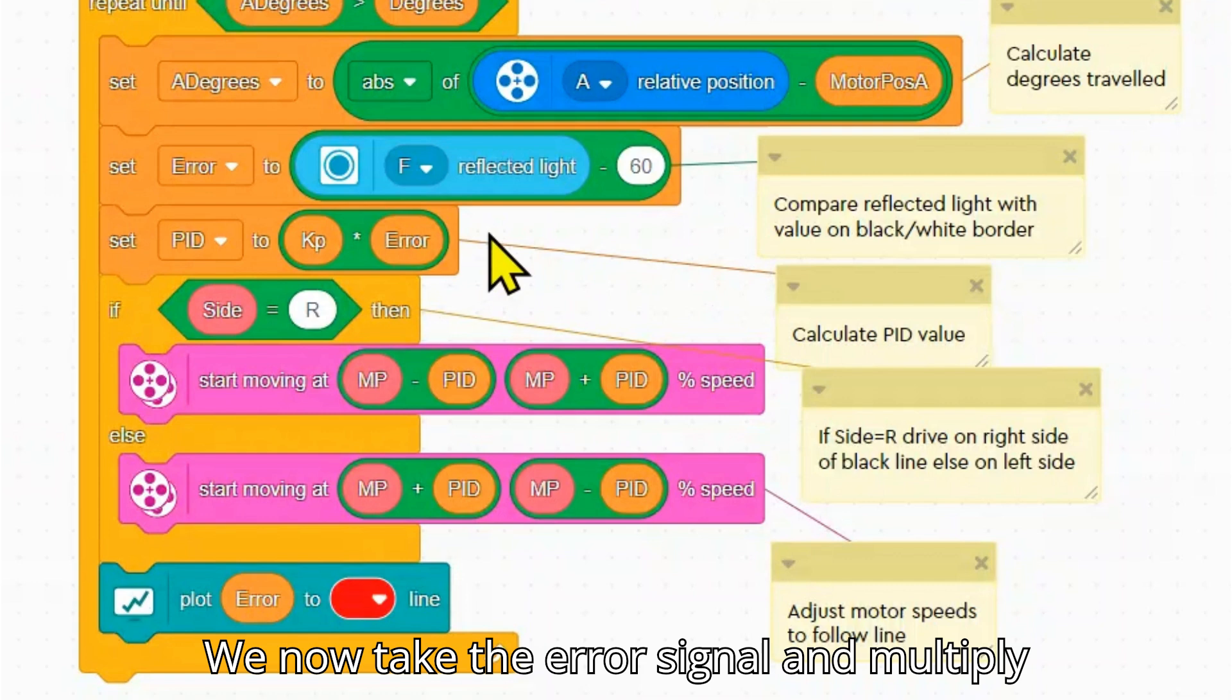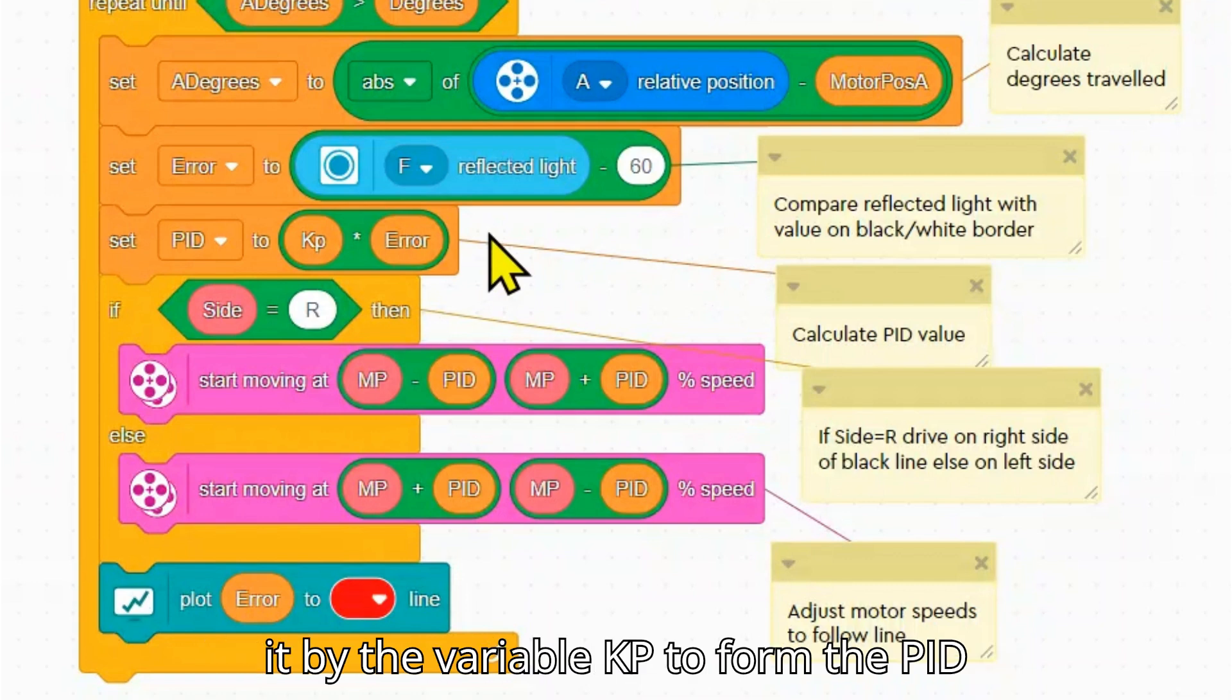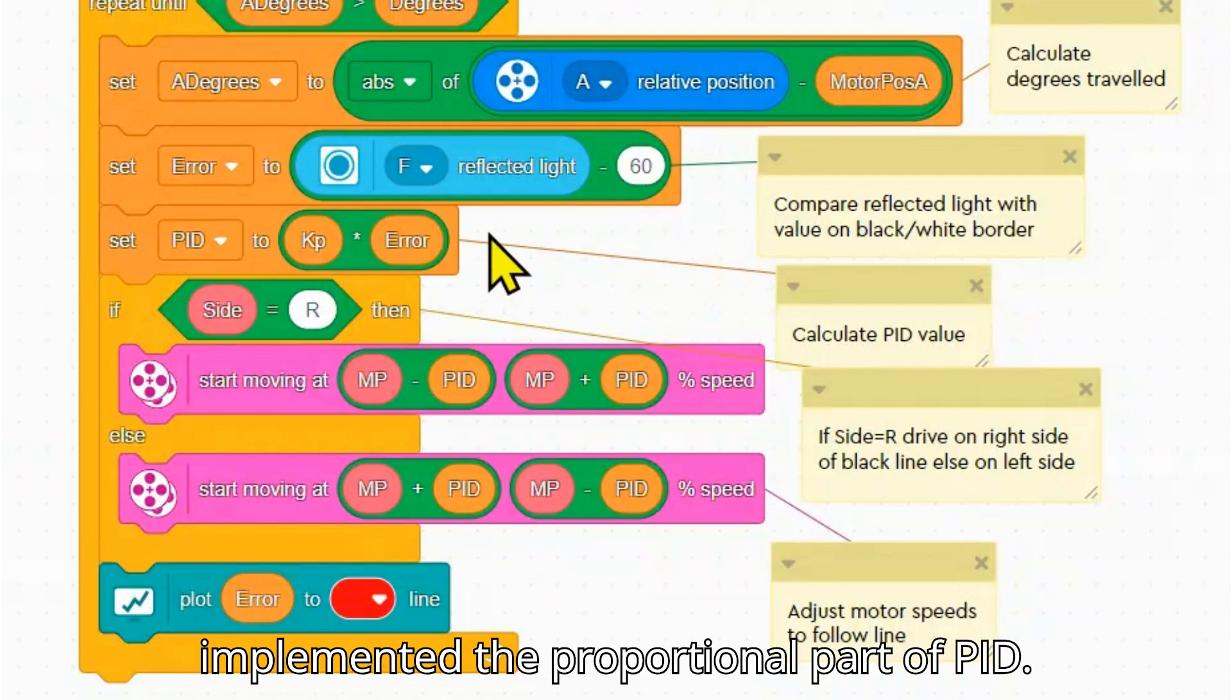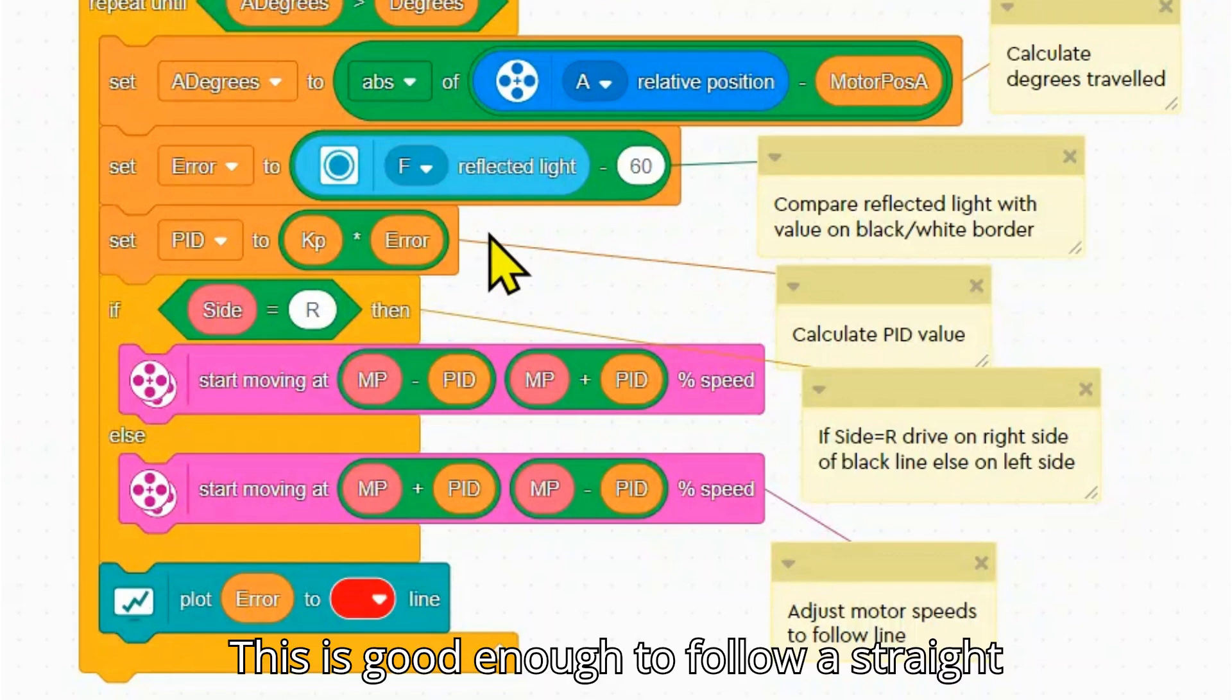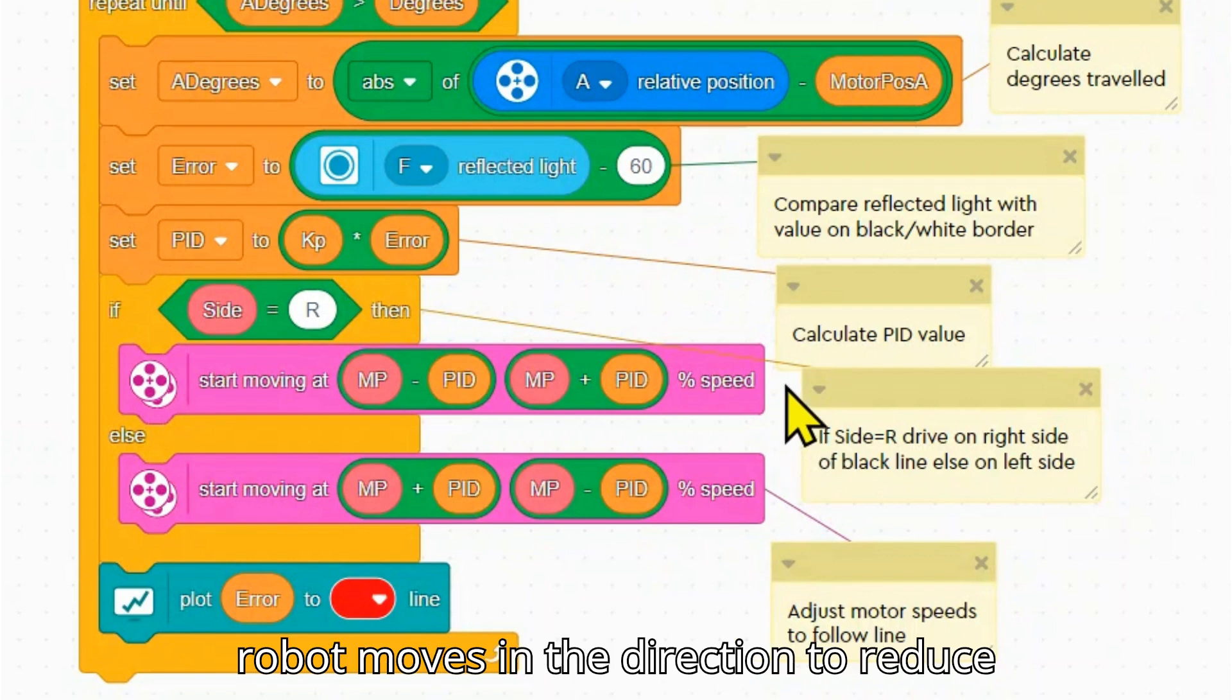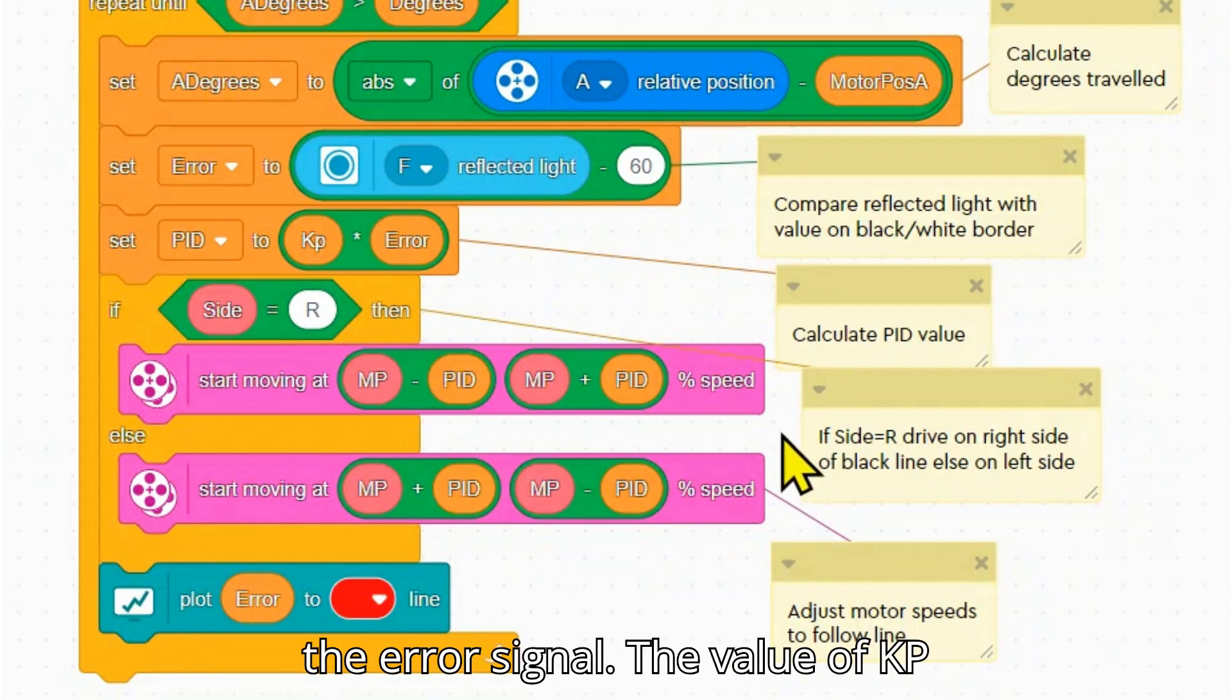We now take the error signal and multiply it by the variable KP to form the PID control signal. Here we have only implemented the proportional part of PID. This is good enough to follow a straight line. The PID signal modifies the motor speed so that the robot moves in the direction to reduce the error signal.